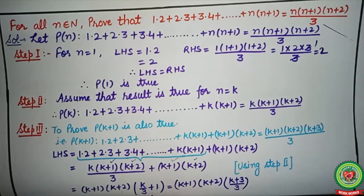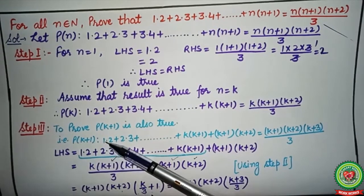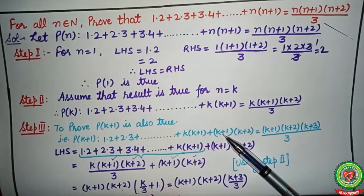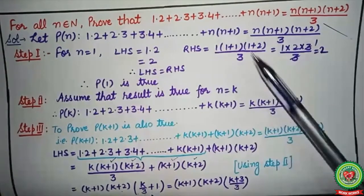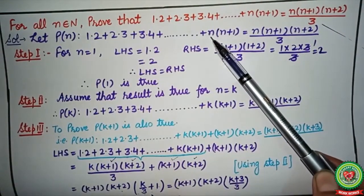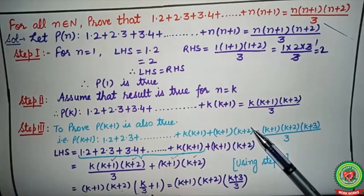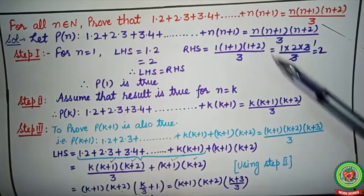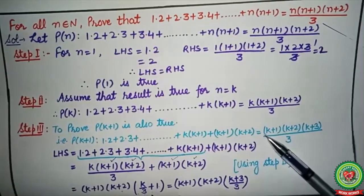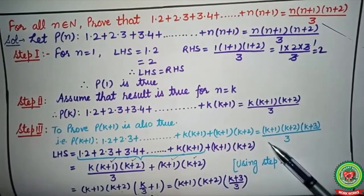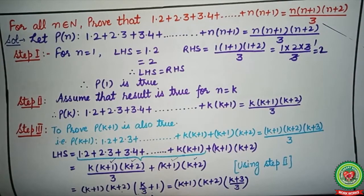In Step 3, we have to prove the result is true for n = k+1. First, let's write what we desire. P(k+1) has the first k terms as before, plus the (k+1)th term — obtained by replacing n with k+1 — which is (k+1)(k+2). On the right hand side, replacing n with k+1 gives the desired result: (k+1)(k+2)(k+3)/3.